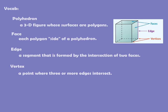An edge is a segment that is formed by the intersection of two faces. Looking at the diagram: here's a face on top and a face on the side, so right there that's considered an edge. Similarly, the back and side form an edge, the top and front form an edge, and the bottom and side form an edge.